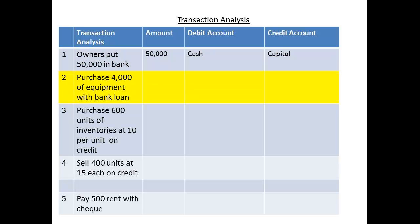The second transaction is to purchase £4,000 of equipment through a bank loan. The amount that is to be entered to the accounts is £4,000. We shall debit the asset account of equipment — this increases the asset of equipment — and then credit the liability account for the bank loan. This increases the liability of bank loan.